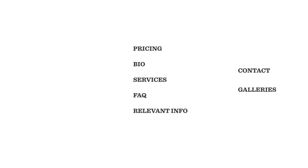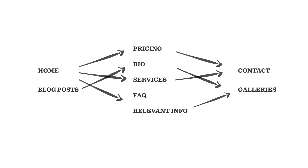Then determine the main entry points into your site — that's your homepage for sure, and maybe some other popular pages or blog posts. You can find the most popular ones in Google Analytics and Google Search Console. Finally, you link them all together with CTA buttons: from all your site's entry points, to the relevant intermediary steps, and then to the destination pages.